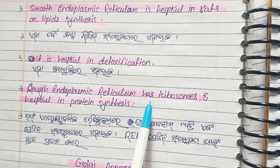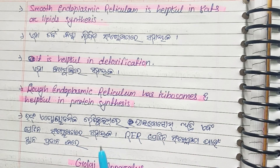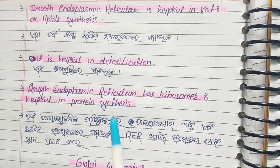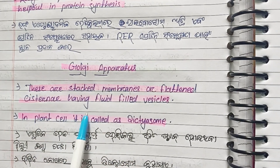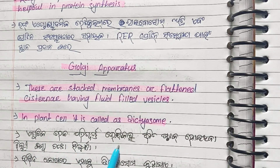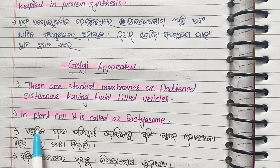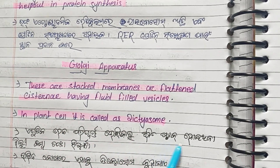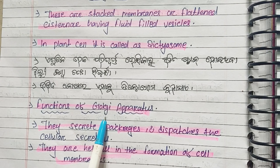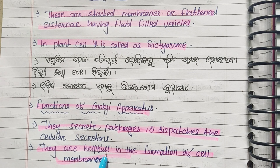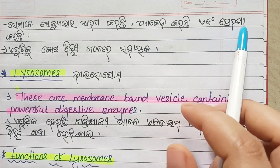Smooth ER helps in vitamin synthesis. Rough endoplasmic reticulum is important as a protein pathway. In plant cells, the Golgi body is called dictyosomes. The function of the Golgi apparatus is to secrete, package, and dispatch secretions.